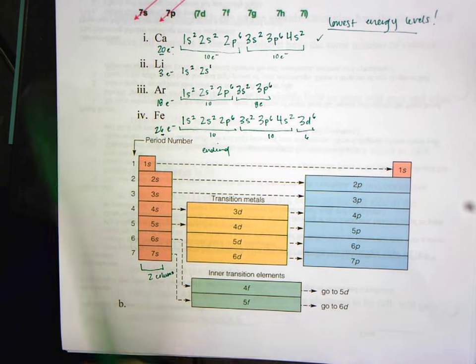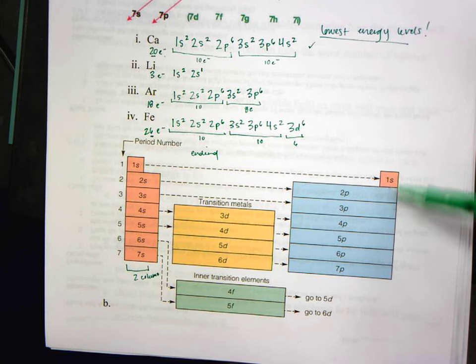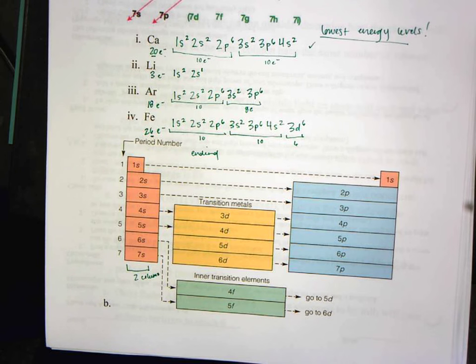If we look at argon, argon is in the third row. So 1, 2, 3. So it's in the third row. Notice that it ends 3p6. So this is a really important chart for you guys to have. You're going to have this down in your notes for tomorrow. And I will see you tomorrow.